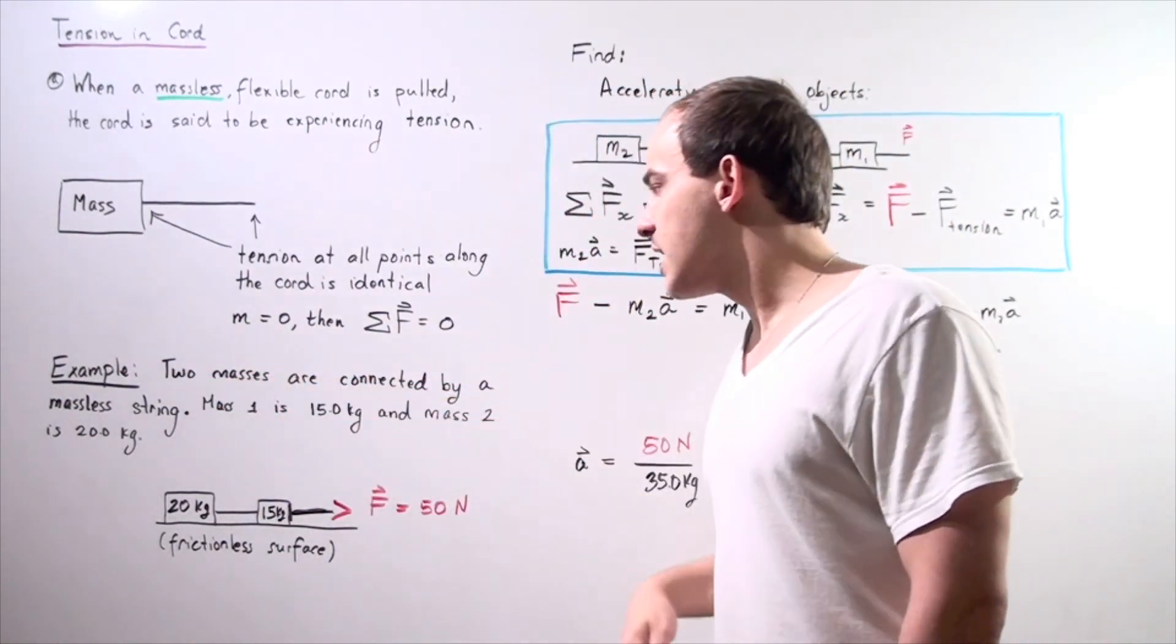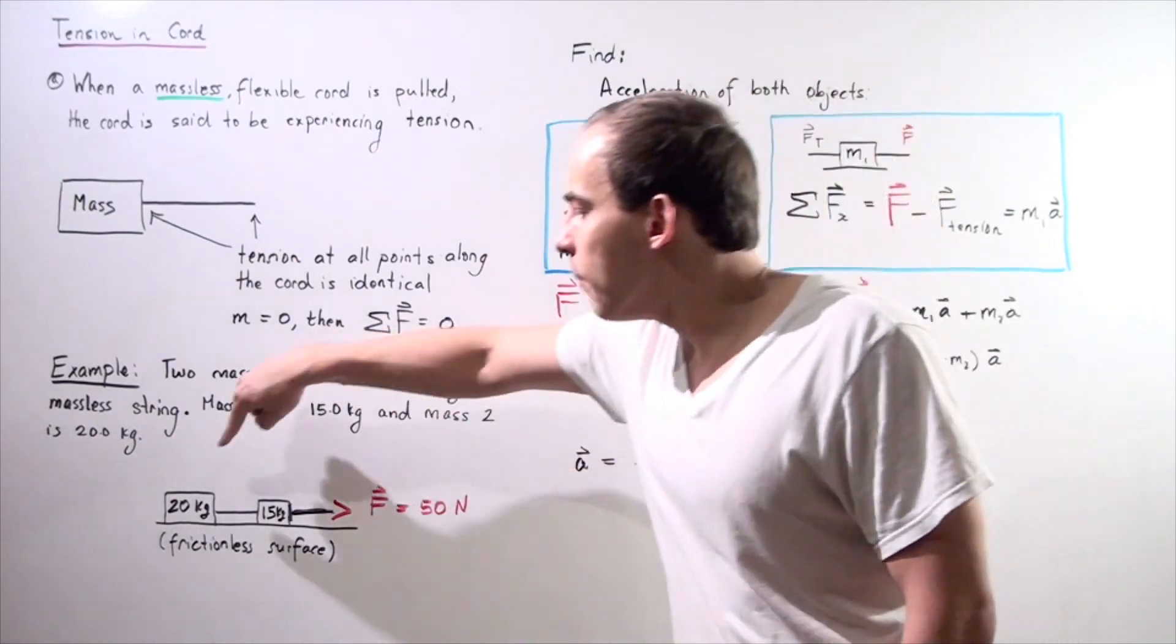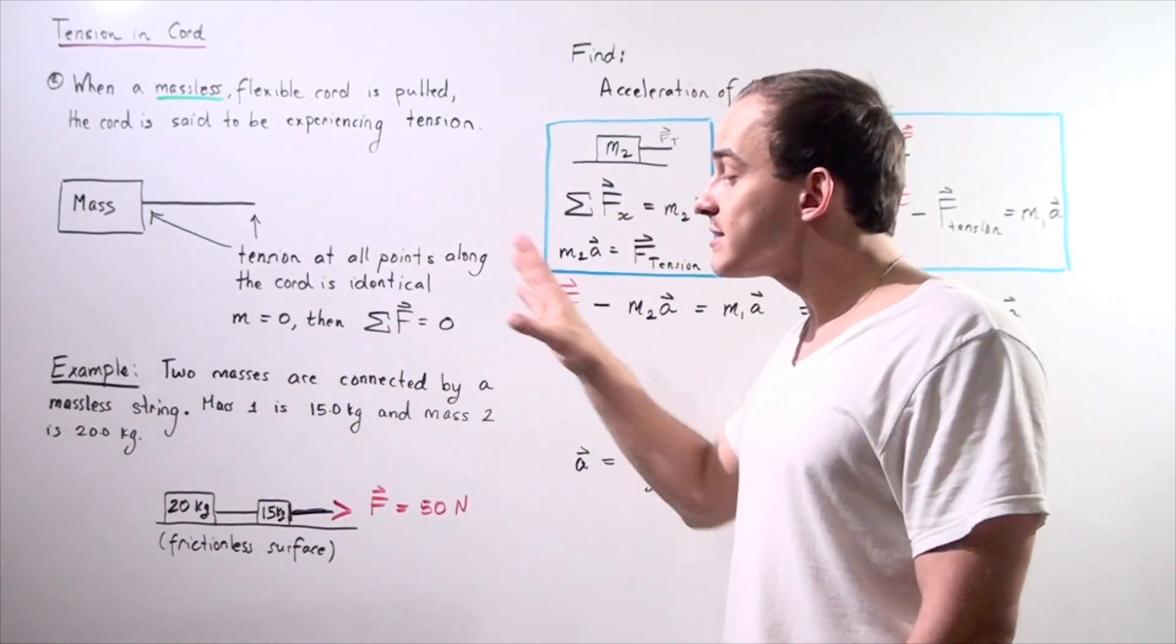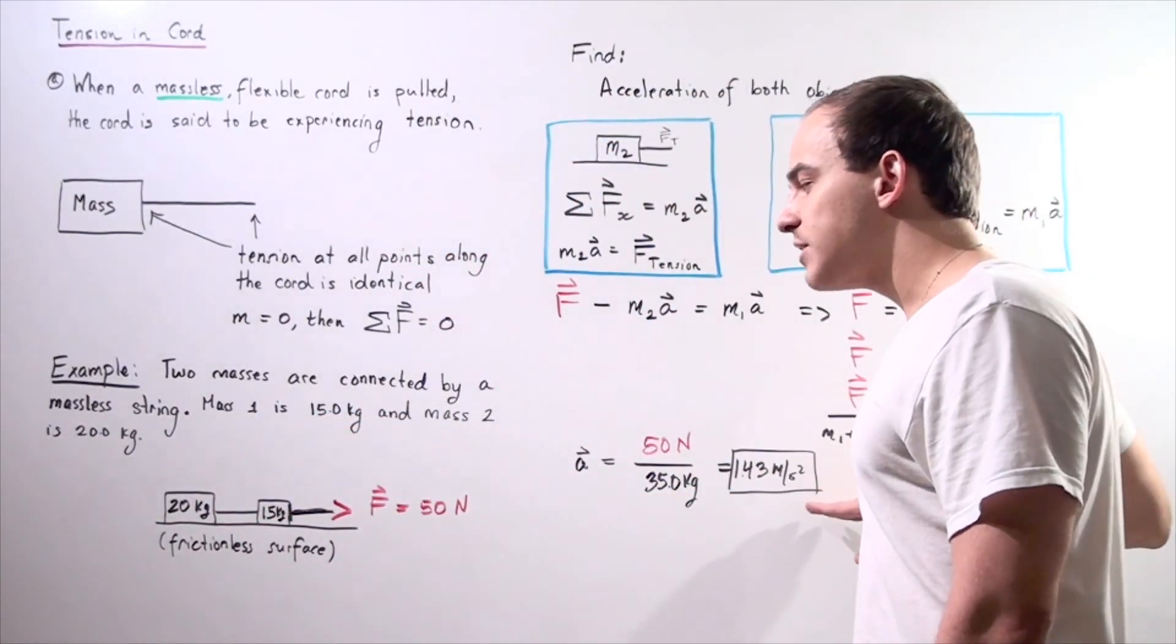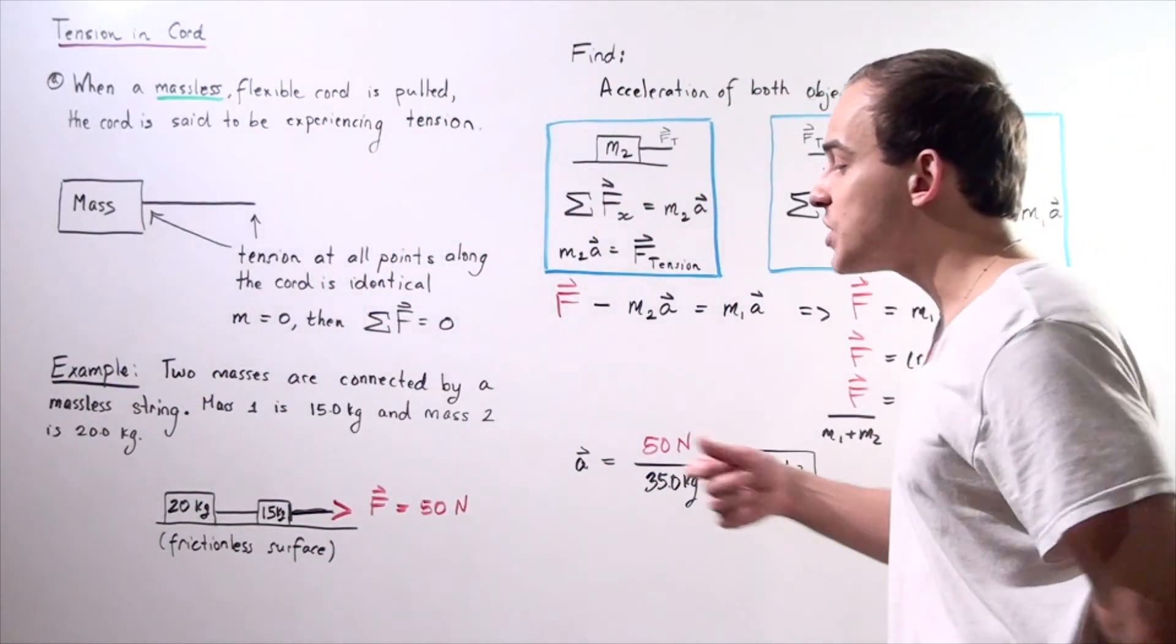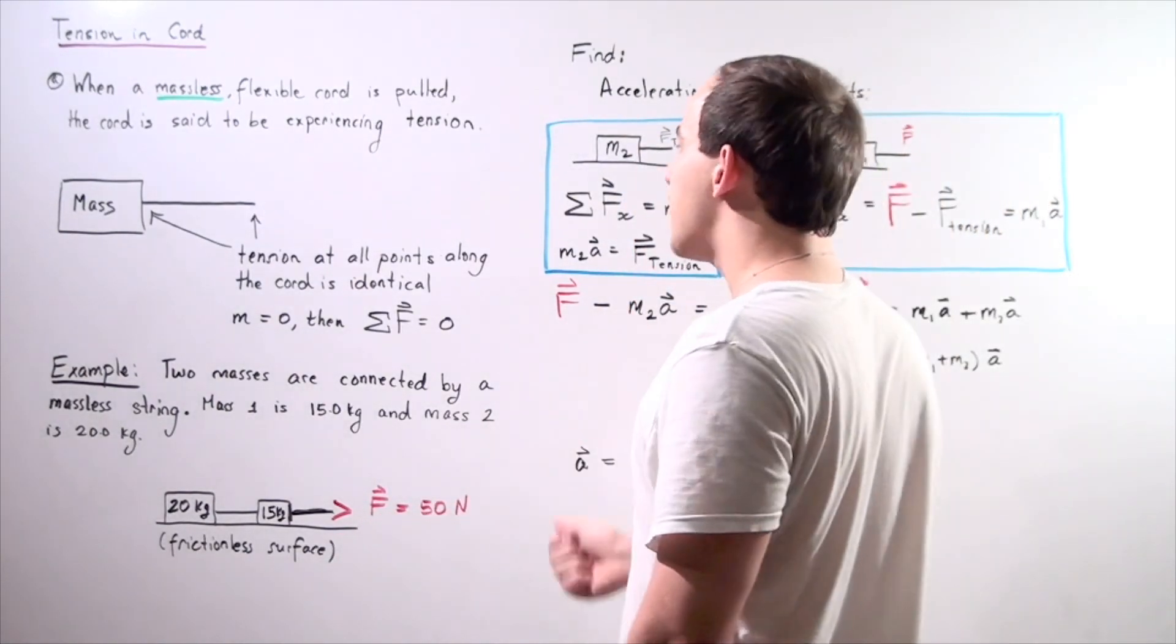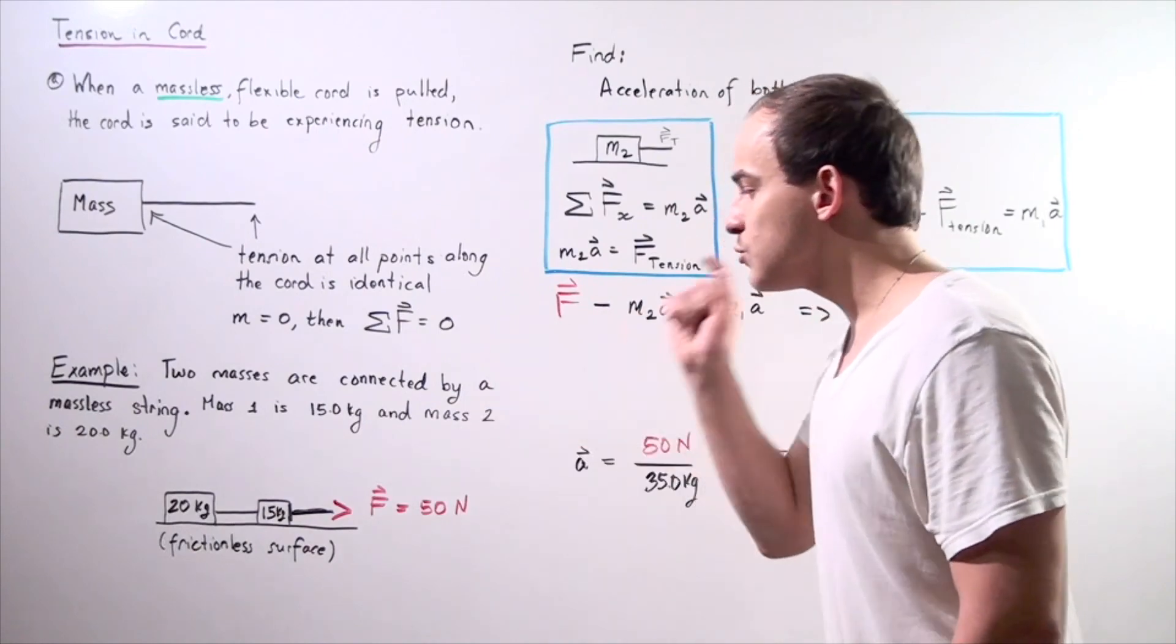Let's suppose we have two masses. Mass one has a mass of 15 kilograms and mass two has a mass of 20 kilograms. Both objects are connected by a massless cord and we have a second massless cord connected to object number one. Our system is positioned on a frictionless surface. We choose this way to be the positive direction along the x-axis and this way to be the negative direction. Let's suppose I pull on cord number one with a force of 50 newtons in the positive direction. We want to find what our acceleration is of both masses.